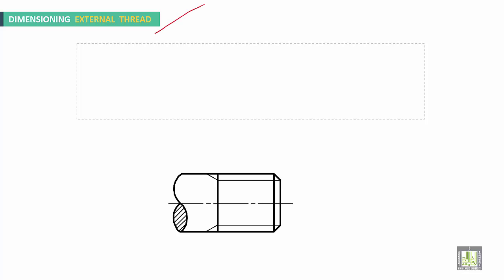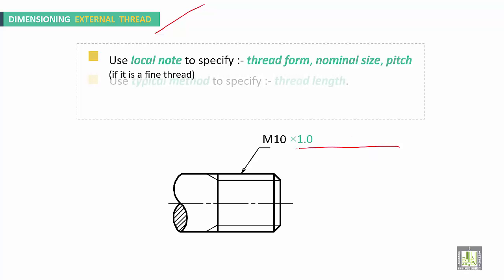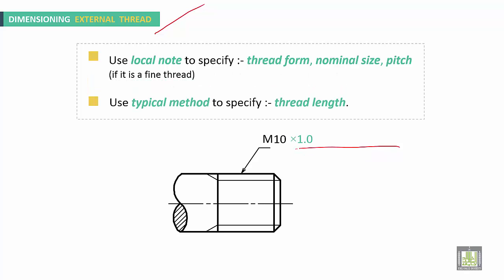For dimensioning of external thread, use a local note to specify the thread form and nominal size. If it is a fine thread, for example M10 fine, you must include the pitch (e.g., multiply by 1). If it is coarse, that is not required. Use the typical method to specify thread length.